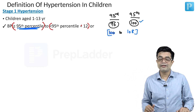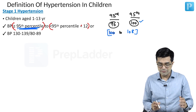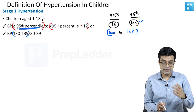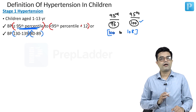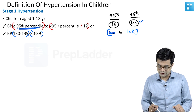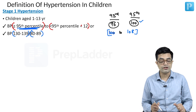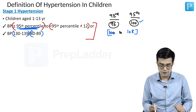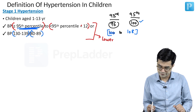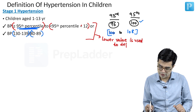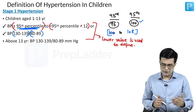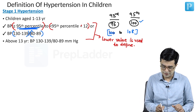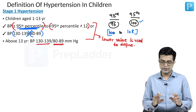Additionally, if the systolic BP is between 130 to 139 or diastolic BP is 80 to 89, that is also Stage 1 hypertension. If these two criteria give different results, the guidelines say the lower value is used to define Stage 1. For children above 13 years, the cutoff is straightforward: systolic 130 to 139 or diastolic 80 to 89 is Stage 1 hypertension.